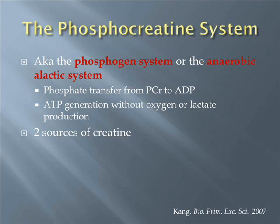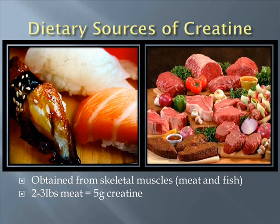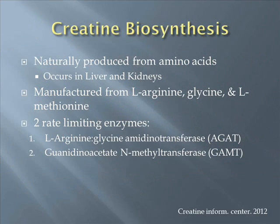There are two sources of creatine for this pathway: diet and biosynthesis. Dietary creatine provides roughly half of the total amount of creatine used by the body and is obtained from skeletal muscles, meat, and fish. As a general rule, for every two to three pounds of meat consumed, five grams of creatine will be provided. The other half of your creatine stores are synthesized in various body tissues, primarily the liver and kidneys.